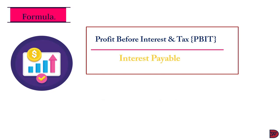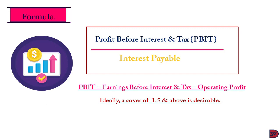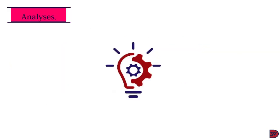Let's look at the formula: Profit Before Interest and Tax (PBIT) divided by interest payable. The profit before interest and tax is the same as Earnings Before Interest and Tax (EBIT), or the operating profit, which can be found in the statement of profit or loss. The interest payable can also be found in the statement of profit or loss. As a general rule of thumb, a cover of 4.5 and above is ideal — every ratio is supposed to be above 1, but to be in a comfortable situation a threshold of 4.5 is set.